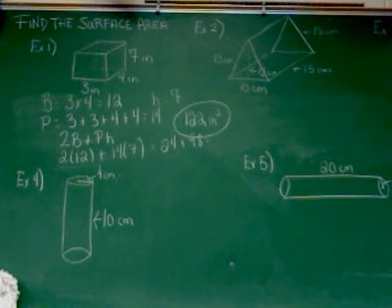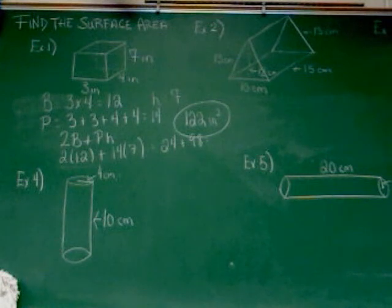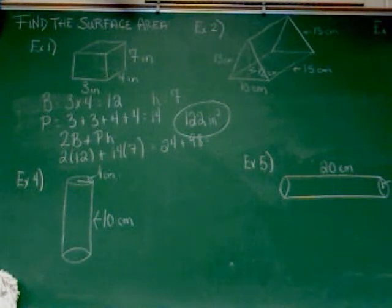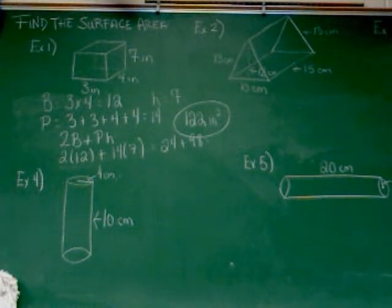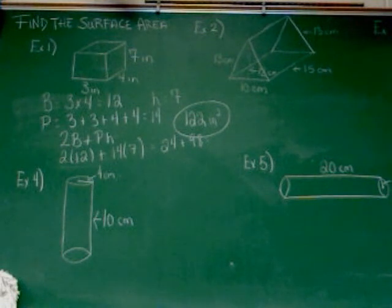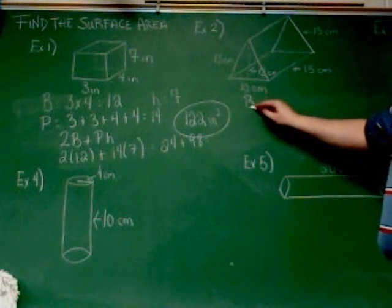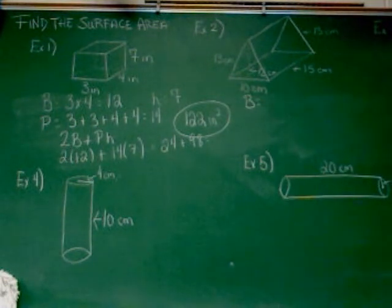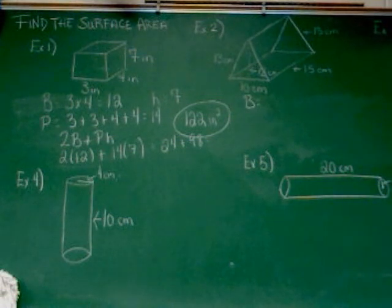Remember, in a prism the sides are rectangles. So these are the sides, which means these have to be the bases. The bases cannot be the rectangle pieces when it's something like this — so the triangle has to be the base. Now, finding the area of a triangle is where this gets a bit confusing, because the area of a triangle is one-half...